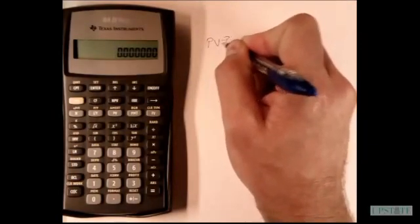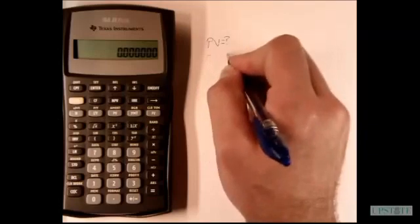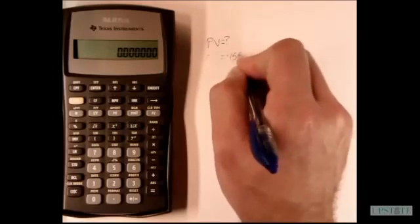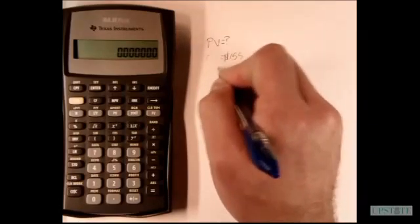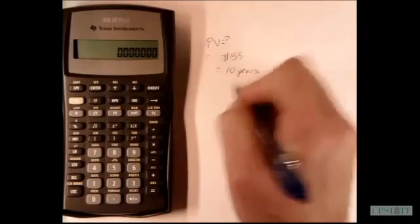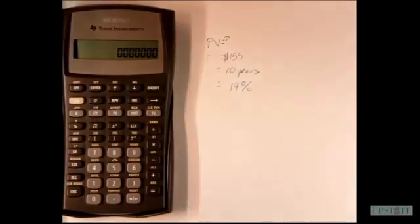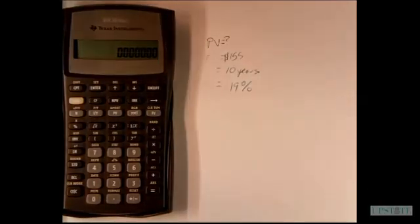We're trying to compute a present value and we're saying that we're going to receive a payment. We're going to receive an amount of $455 and that's going to come in 10 years. And we know that our discount rate is going to be 19%. We're trying to figure out how much that payment of 455 is going to be worth, that payment of 455 in 10 years, how much that's going to be worth right now.